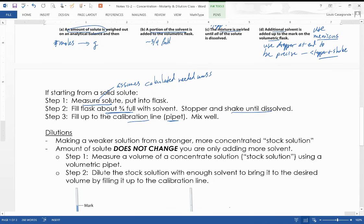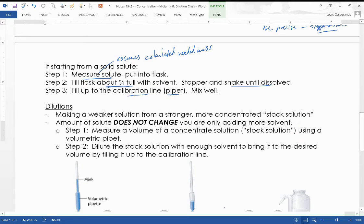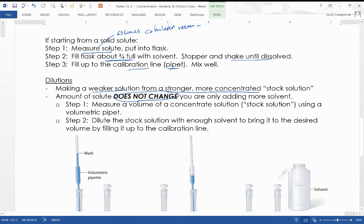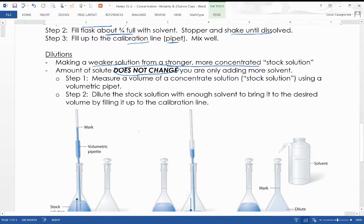Now you don't always have a solid solute. Sometimes we have a stock solution. A stock solution is a stronger, more concentrated solution that you can then make a weaker solution from. So we're diluting. Diluting means to make a weaker solution from a more concentrated one. Now here's a key: the amount of solute does not change. You're only going to add more solvent. So in step one, you're going to, and we'll get to the calculations in a few moments, you're going to figure out a volume of a concentrated solution that you need, the stock solution. So that's going to be the calculation down below. In step two, and that's shown here, they're using what's called a volumetric pipette.